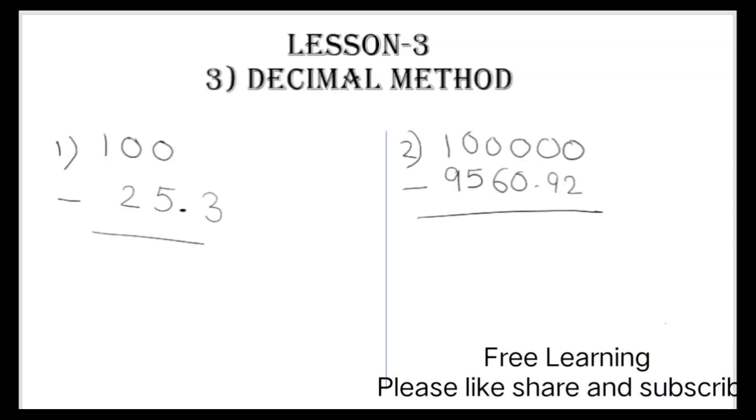So today we will start the third method, decimal subtraction. In this method, the first example is given: 100 minus 25.3. Here you can see there is a decimal, so we will write the decimal number on the upper number.